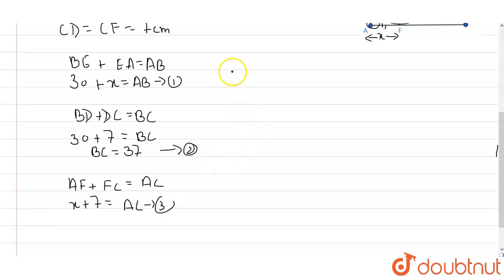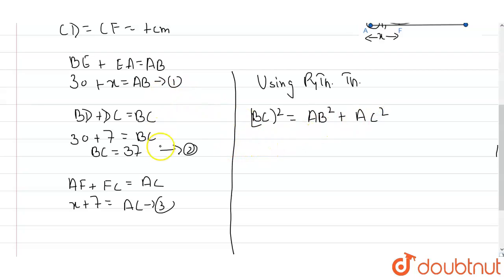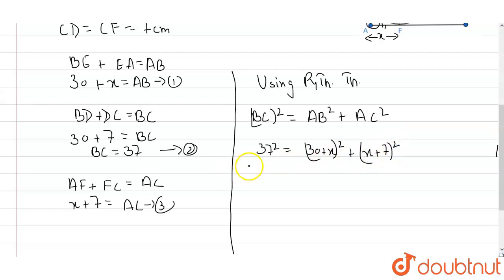Using the Pythagorean theorem on right triangle ABC: BC squared equals AB squared plus AC squared. Substituting our values: 37 squared equals (30 plus x) squared plus (x plus 7) squared.